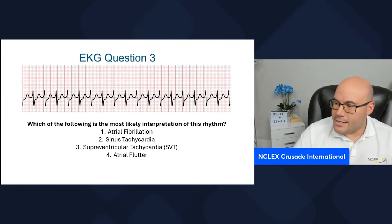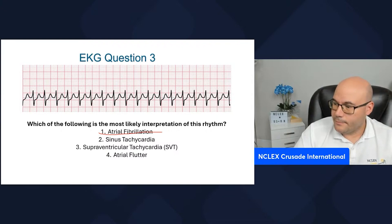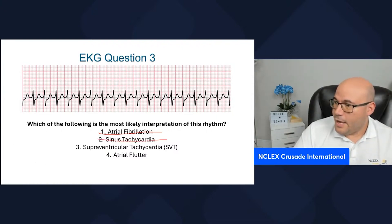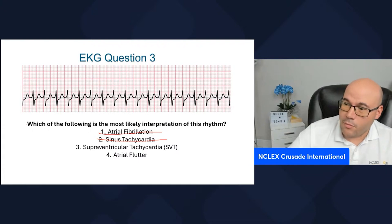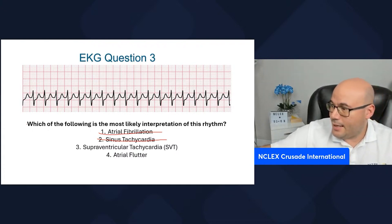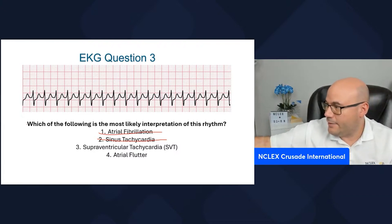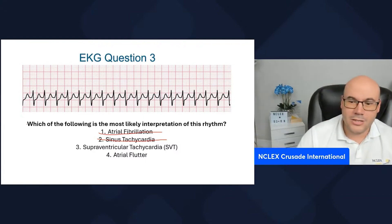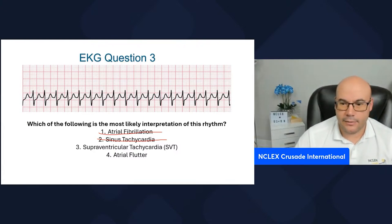So it's not atrial fibrillation because there's no multiple P waves. It's not sinus tachycardia. If we look at the heart rate here, we're counting about 1, 2, 3, 4, 5, 6, 7, 8, 9, 10, 11, 12, 13, 14, 15, 16, 17 — almost 180 beats per minute.